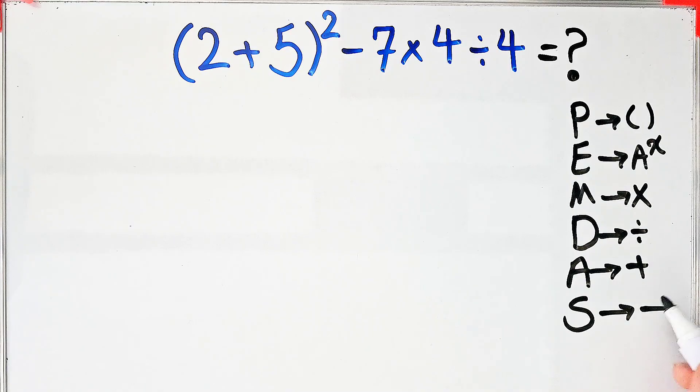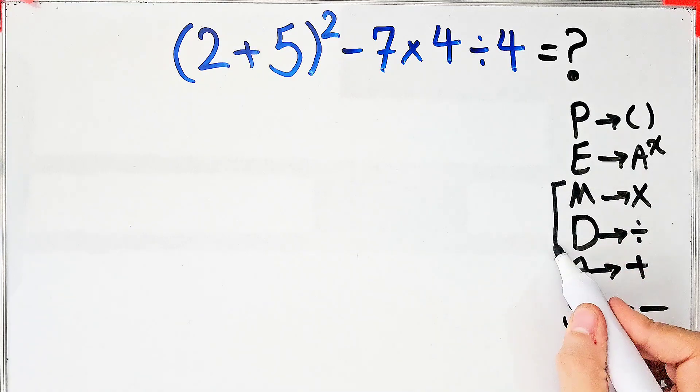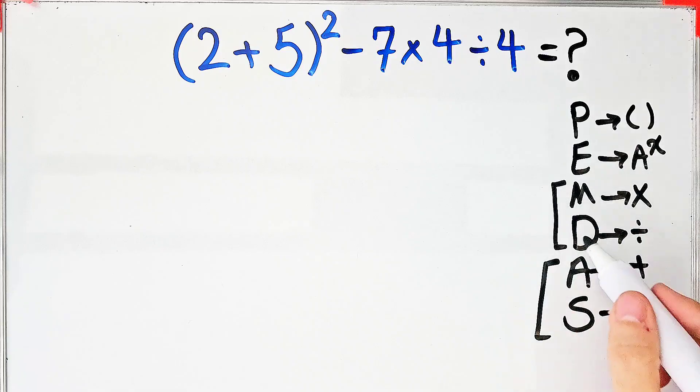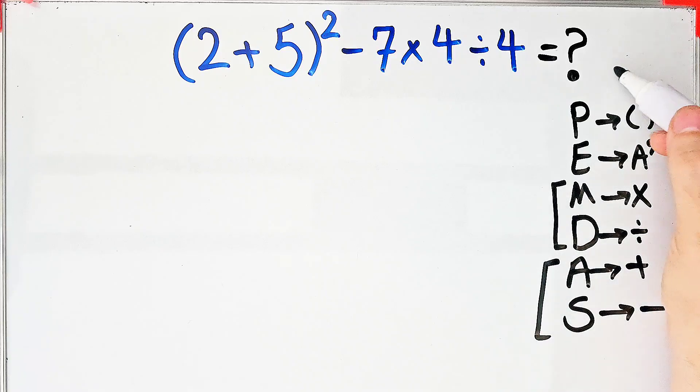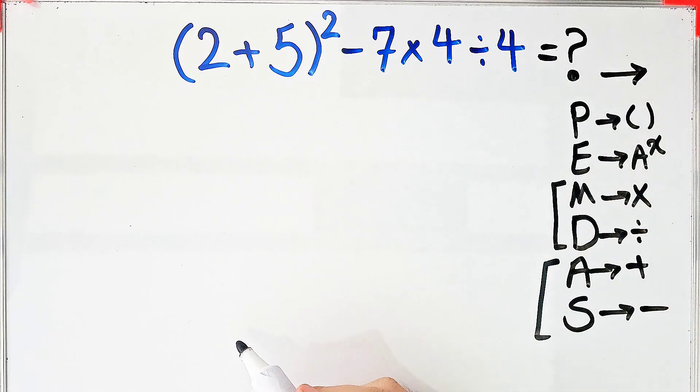Multiplication and division have the same level of priority. Also, addition and subtraction have the same priority. And when we have both in an expression, we start from the left and simplify the question according to the PEMDAS rule.